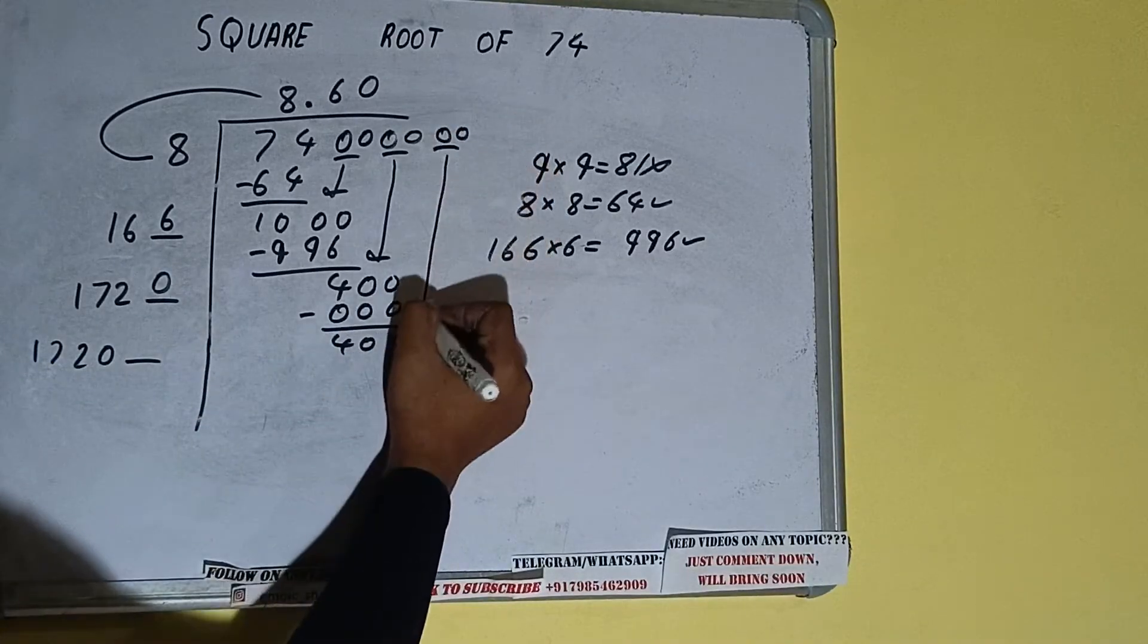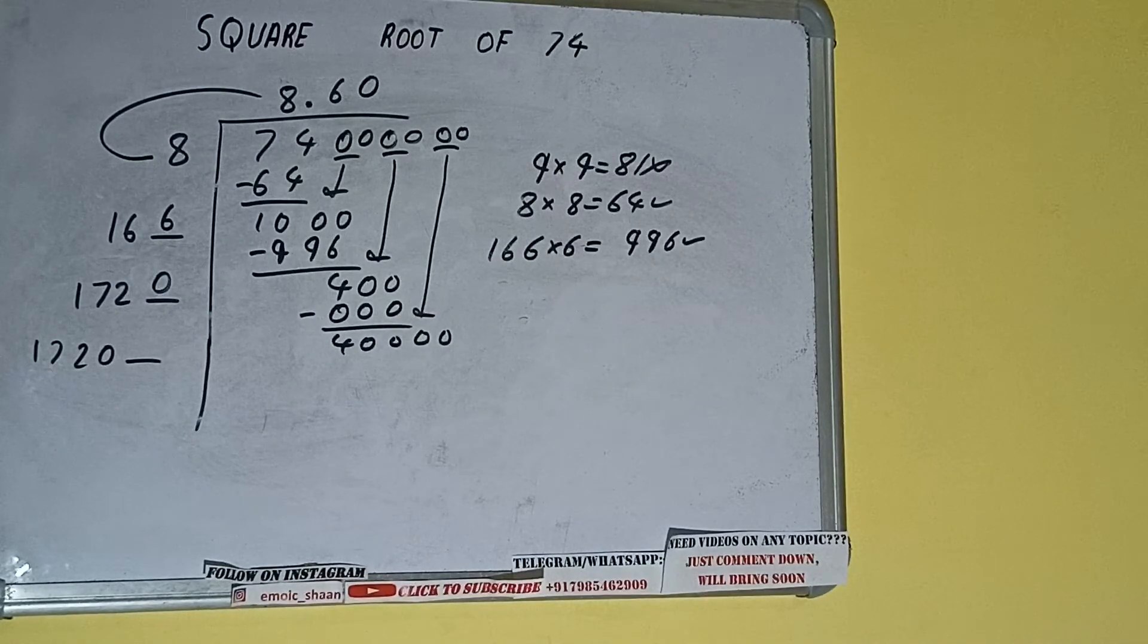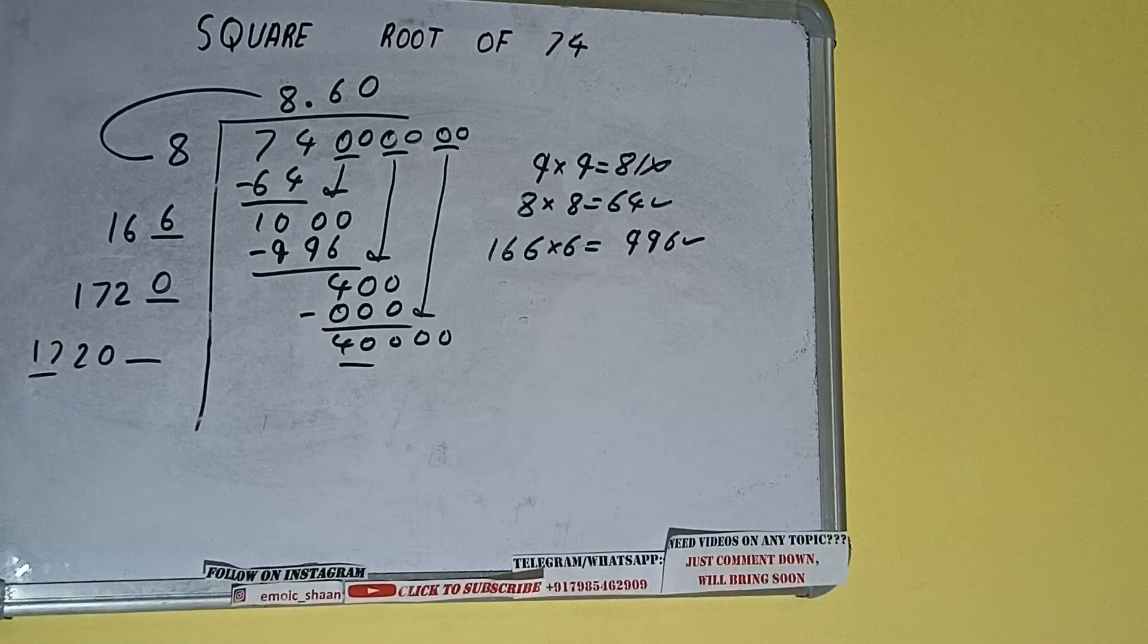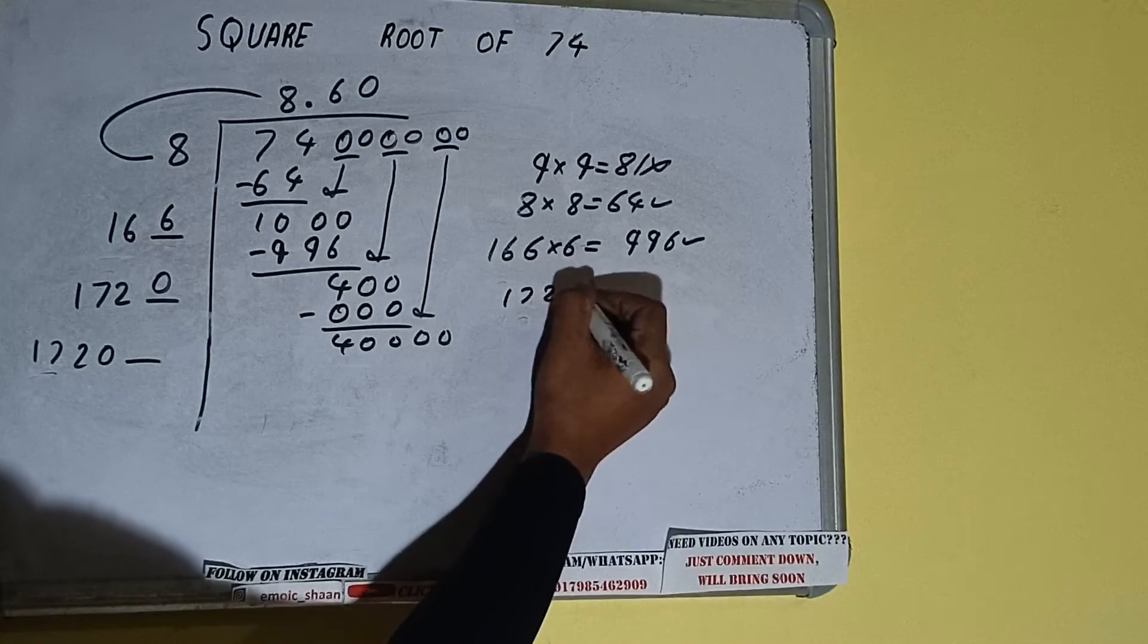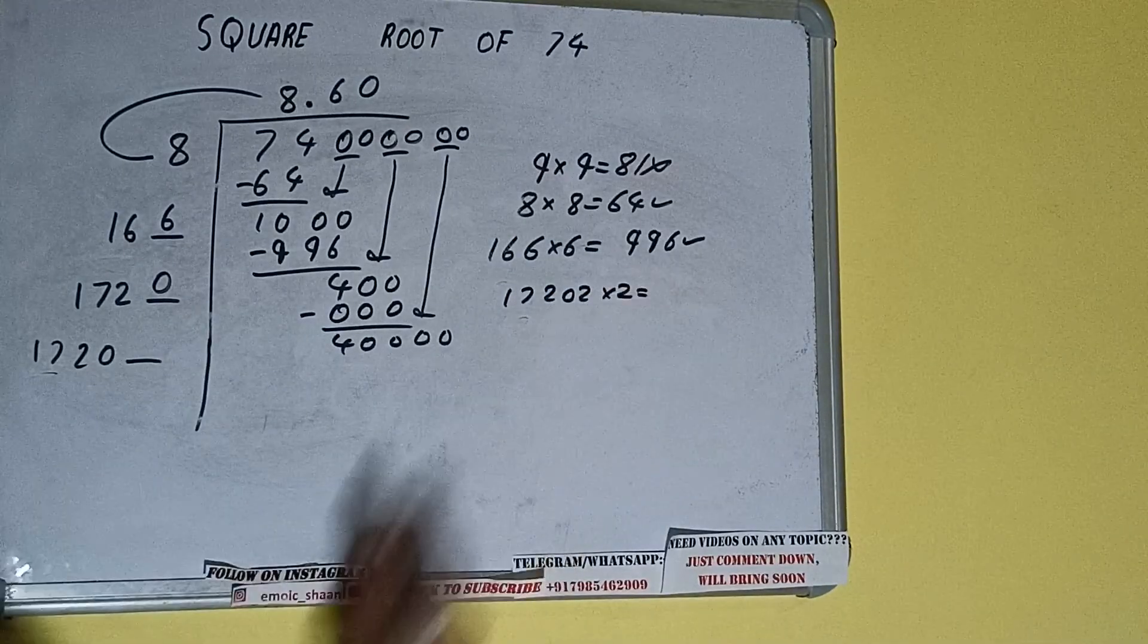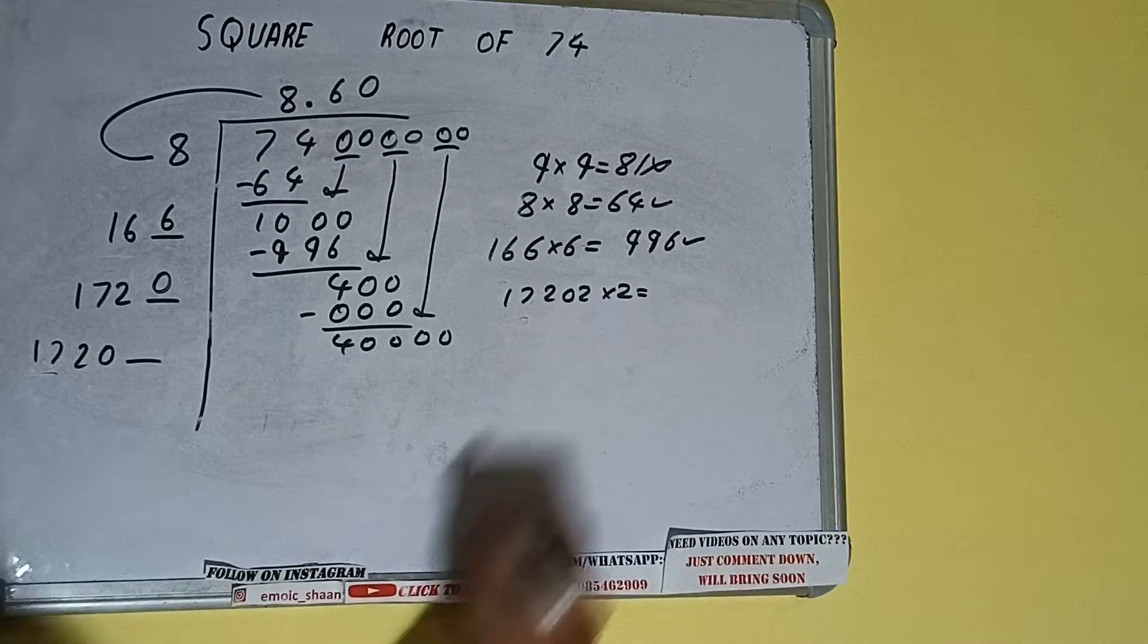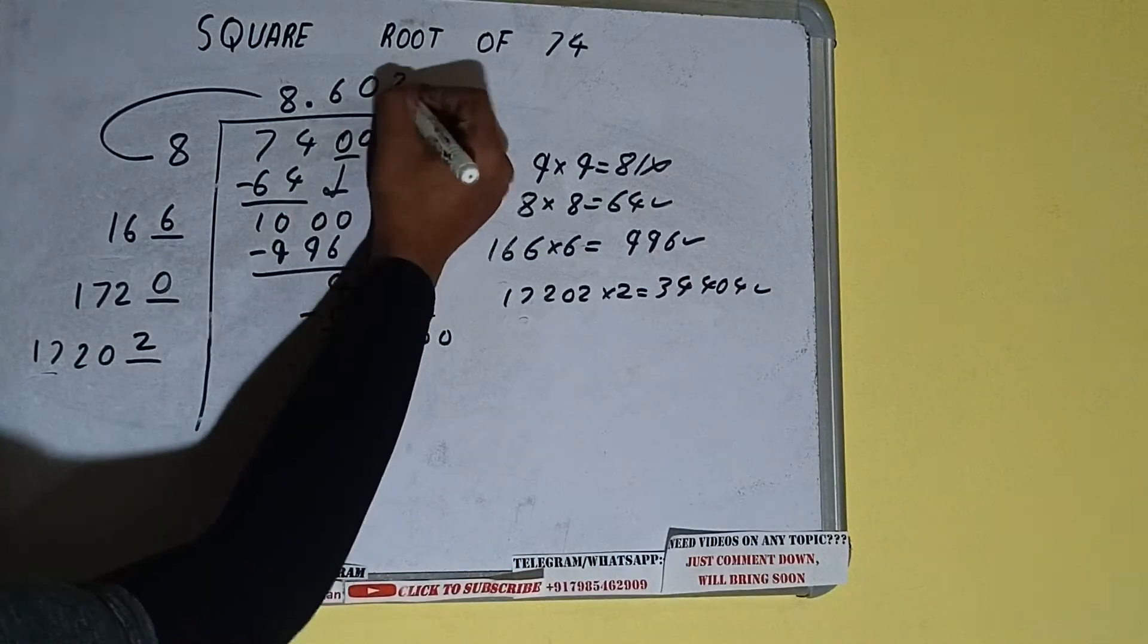Now compare this 17 with this 40. So 17, 2 times is 34. So we can try 2 times 172, 0, 2 into 2 we can try. And we will be getting 34,404 which is good to take. So 2 here and 2 here.